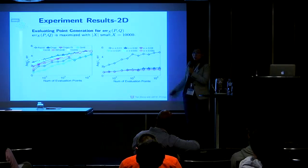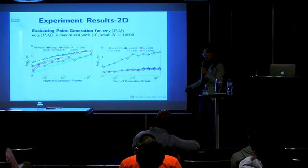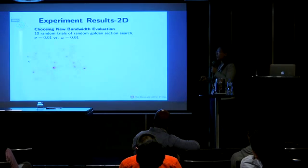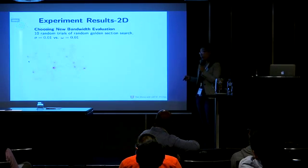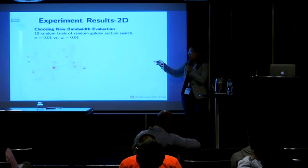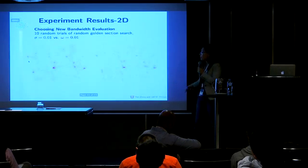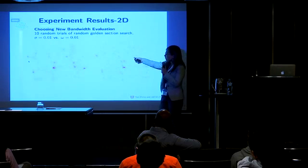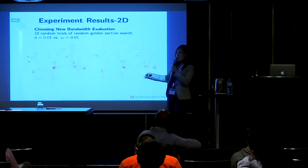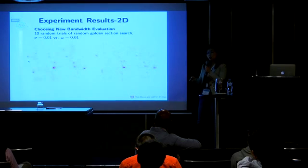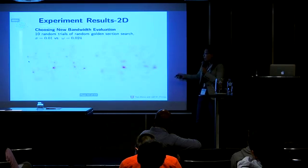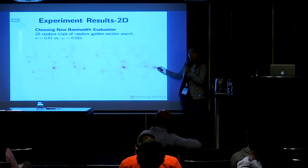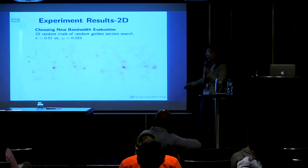This shows the visualization of the two-dimensional Kernel Density Estimation. The original dataset is shown first. If we use the same bandwidth as the original dataset, you can see there are many isolated areas, meaning more local minima are generated compared to the original. But if we use the bandwidth found from the Random Golden Section Search, it smooths out those isolated areas and gives better results.